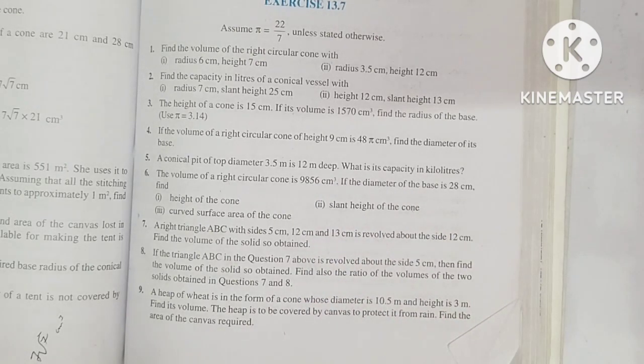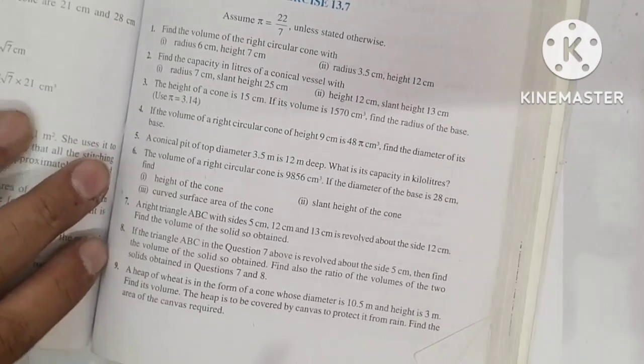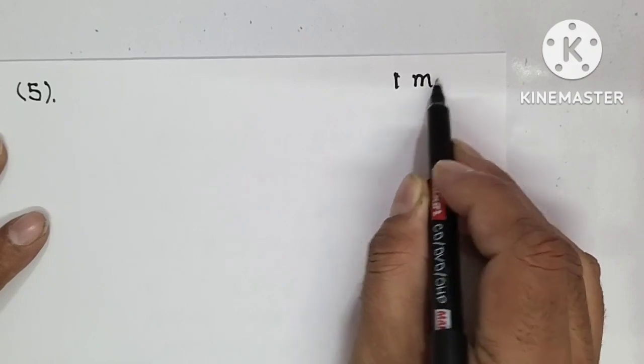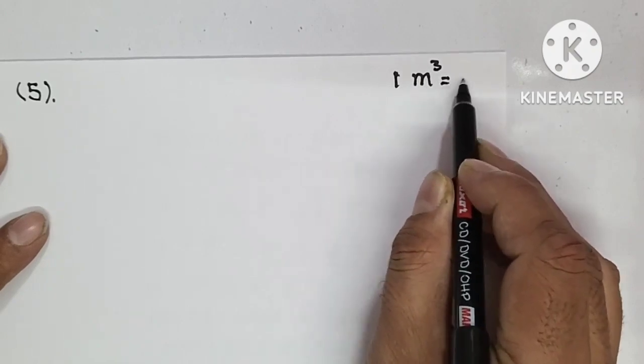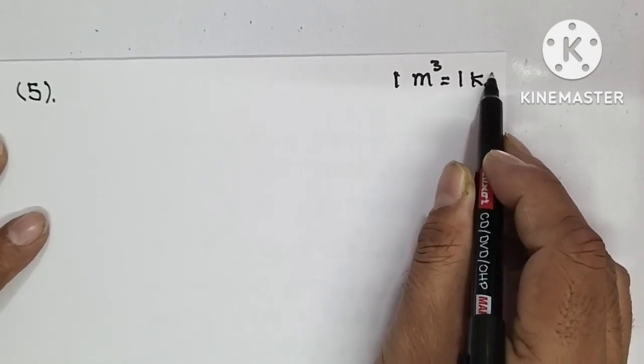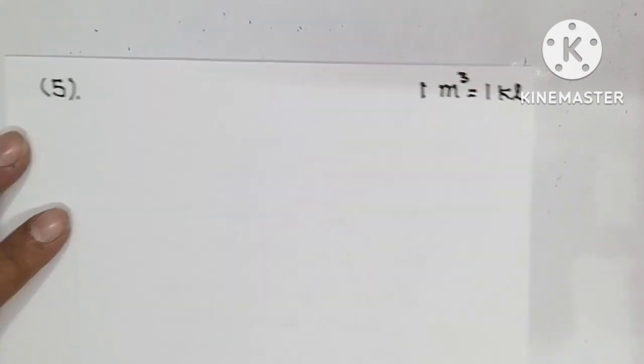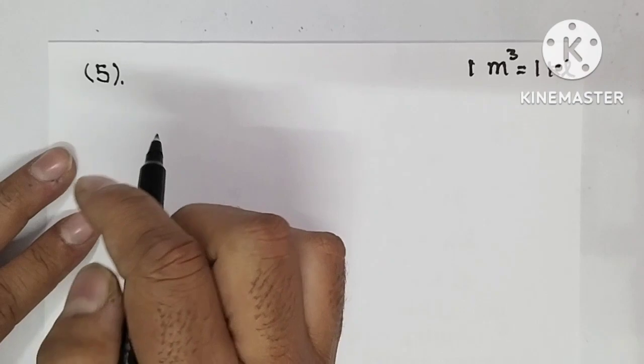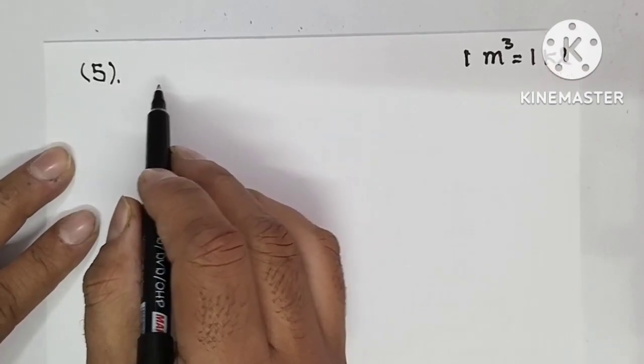Find the capacity in kiloliters. Initially you will get your capacity in meter cube, then convert that into kiloliters. Here in the beginning I am giving you the relationship: 1 meter cube is equal to 1 kiloliter. This will be utilized in the solution.